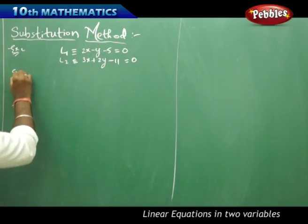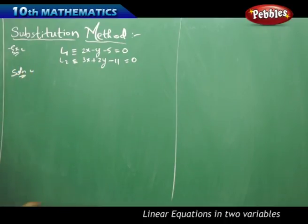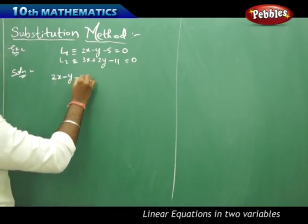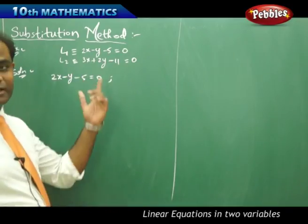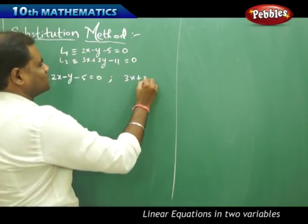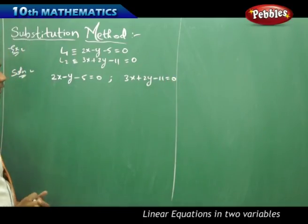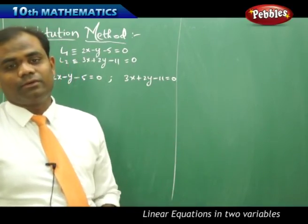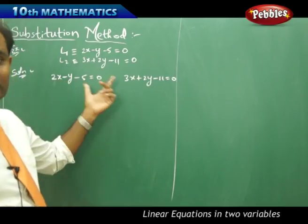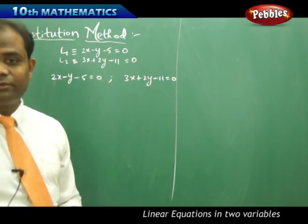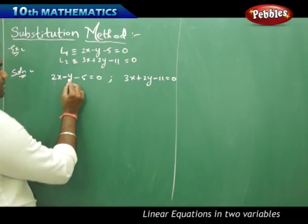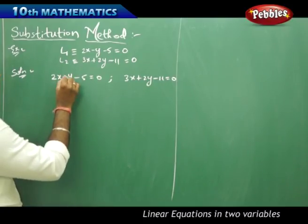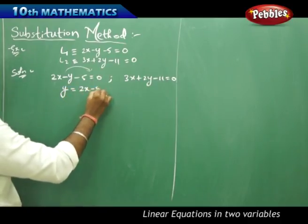To start with, I take each line separately. Line L1 is 2x minus y minus 5 equal to 0, and line L2 is 3x plus 2y minus 11 equal to 0. Since the coefficient of y in L1 is 1, I bring y to the right and get y equals 2x minus 5.